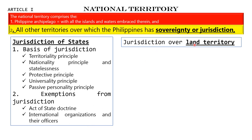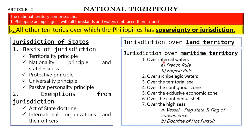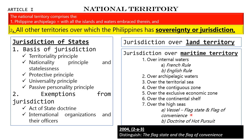The jurisdiction of the Philippines over land territory. More frequently asked is the jurisdiction over maritime territory. Take note of the French rule and the English rule. Also, jurisdiction of the Philippines in the high seas — the difference between the flag state and flag of convenience, and the doctrine of hot pursuit. Recall the flag state and flag of convenience; this was asked in Bar Exams 2004: Distinguish the flag state and the flag of convenience.